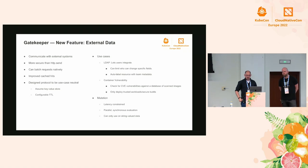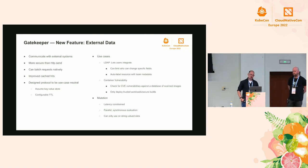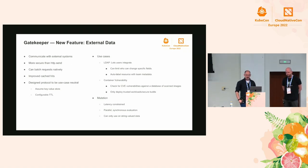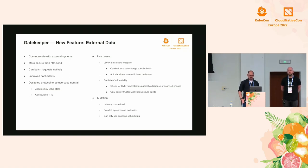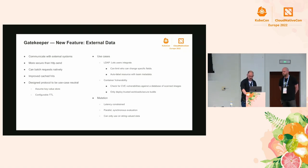Example use cases for the external data feature include LDAP integration, limiting who can change what fields on specific Kubernetes resources, and auto-labeling resources with team metadata using the mutation feature. You can also connect with a CVE vulnerability system to check if images have specific vulnerabilities you don't want on your cluster. For mutation, external data is a bit constrained - evaluation is synchronous, and because you're very latency-constrained when modifying resources (you don't want to kill leader elections), you can only use string value data.